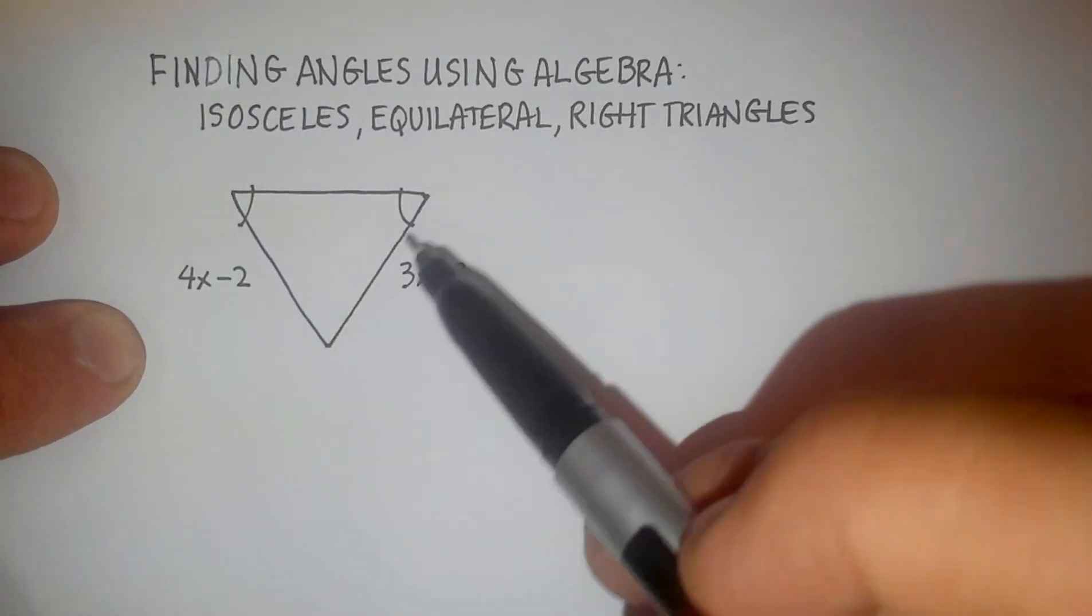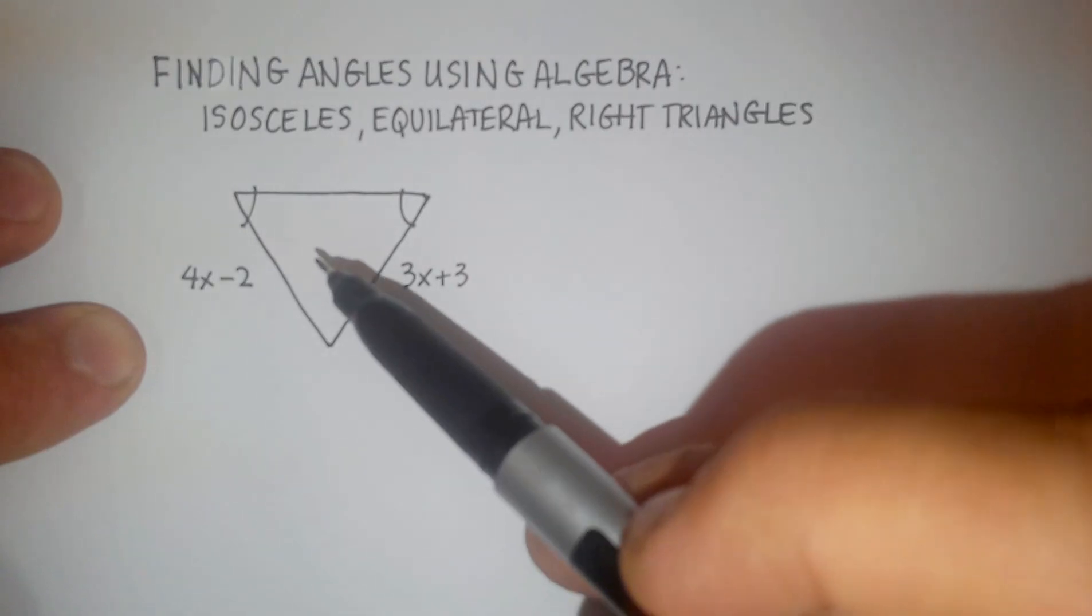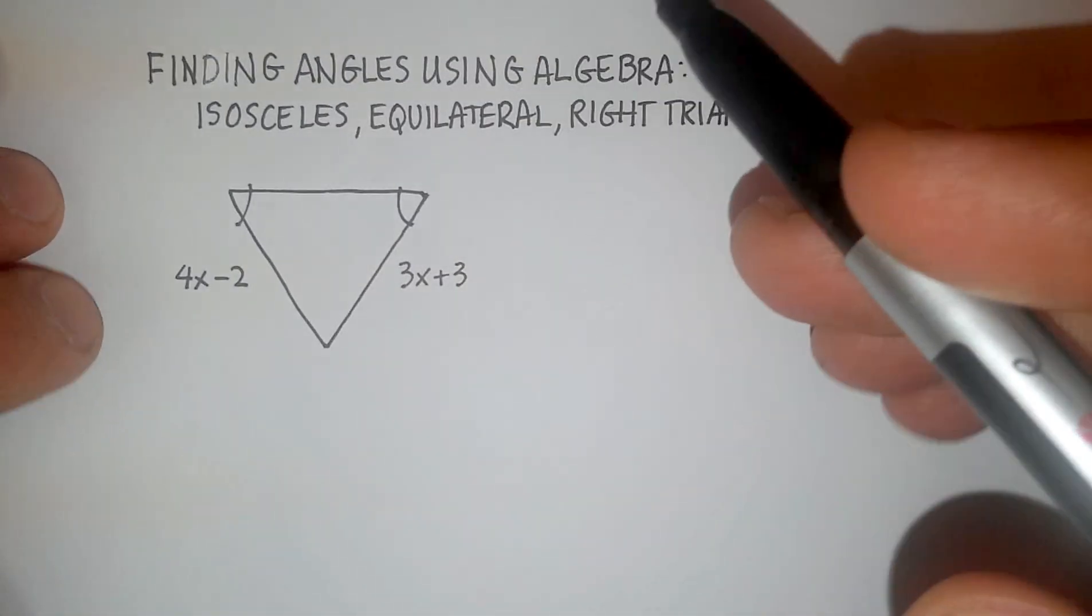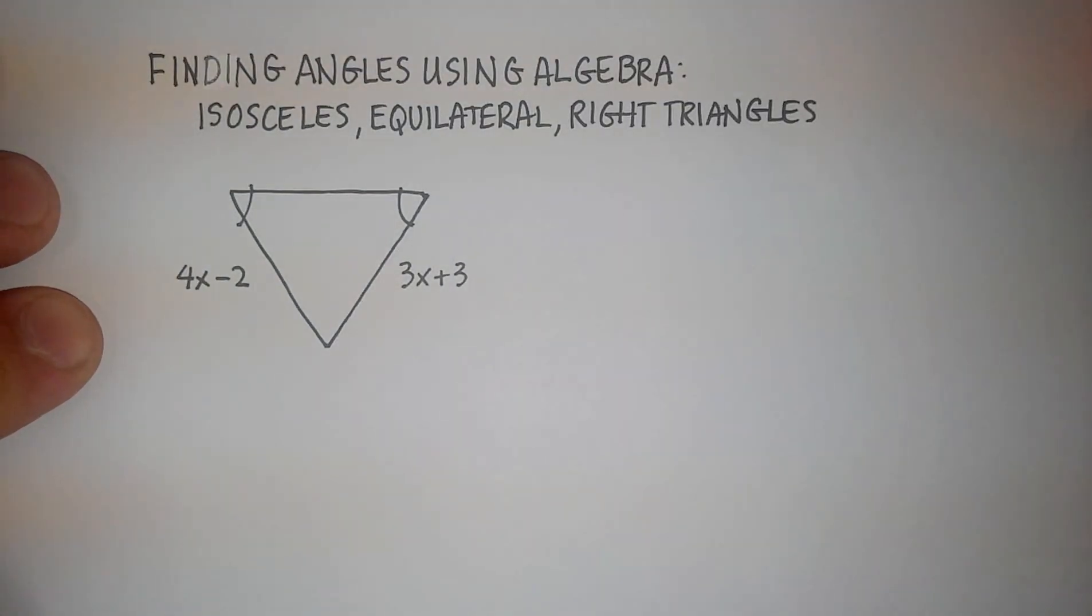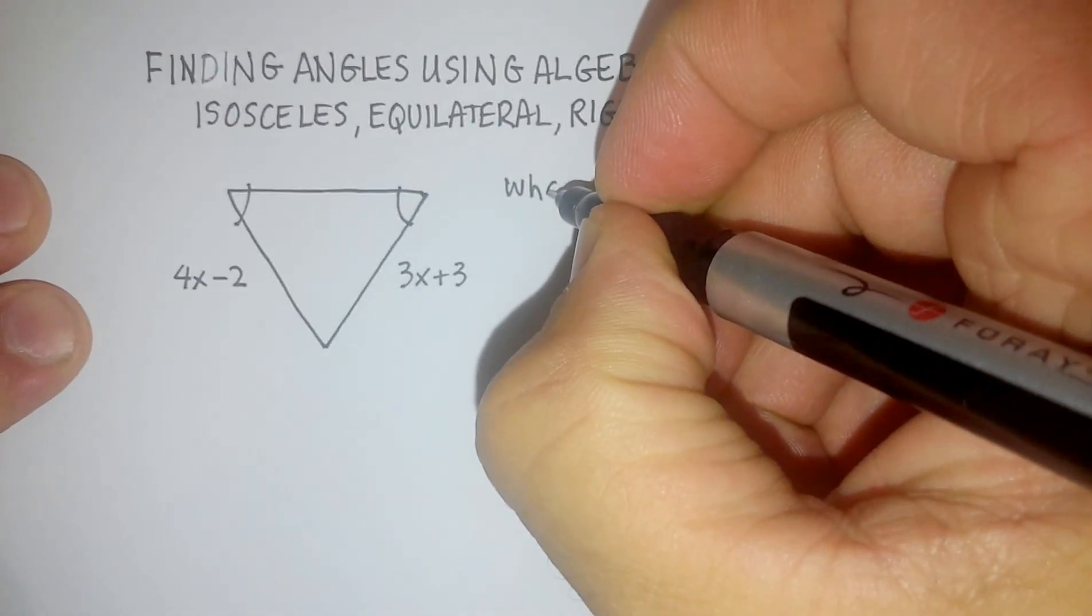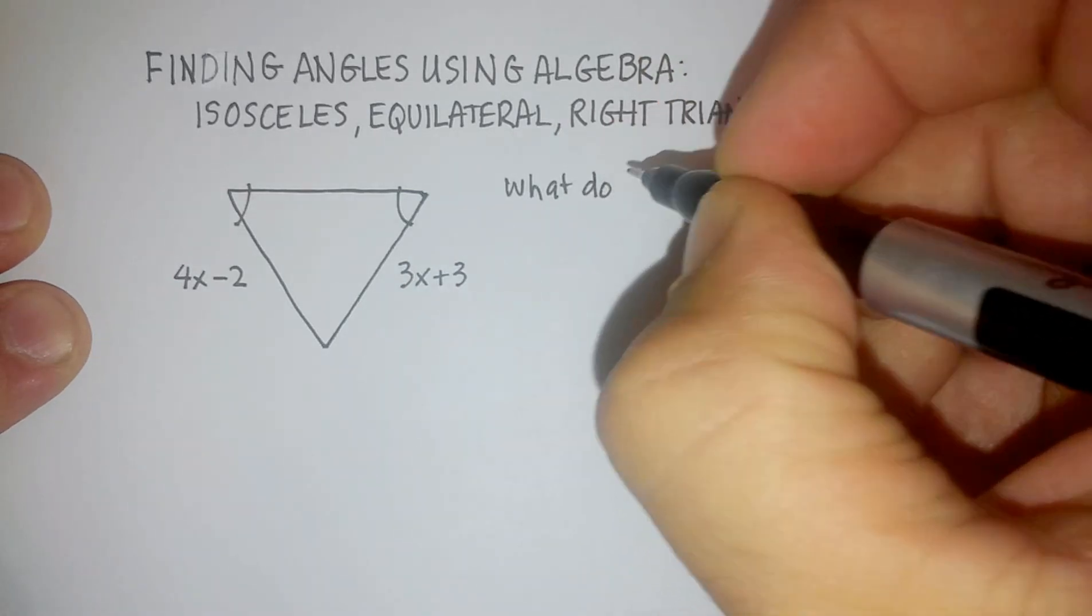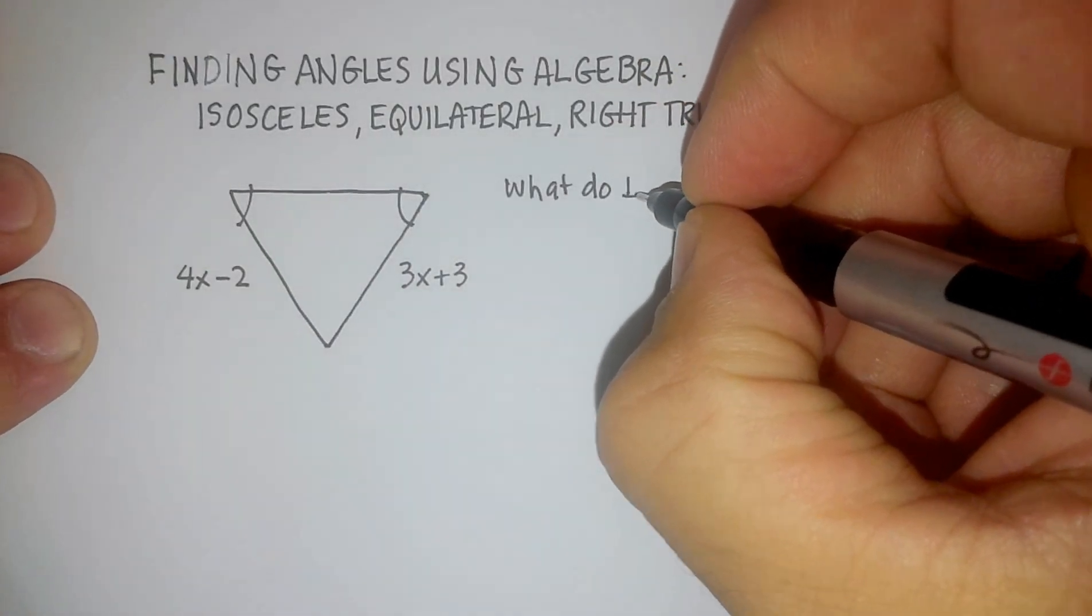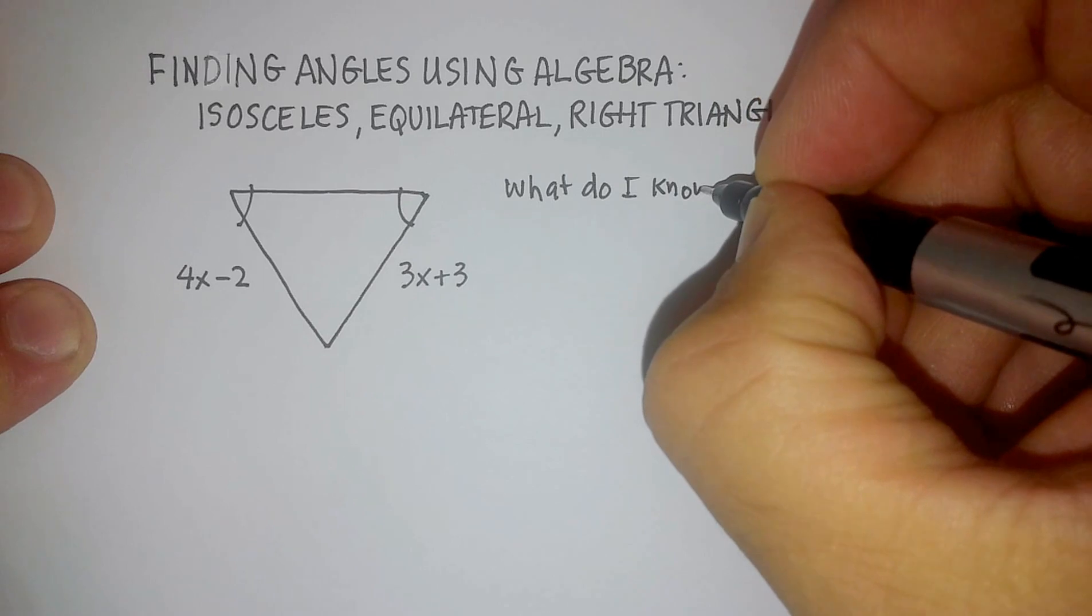So we're going to try to find this side and this side of this particular triangle given the information that we know. I usually try to always start a problem by writing down, what do I know? And that's really important. What do I know from the information that's given to me?